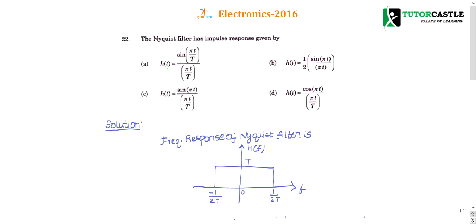Question number 22: the Nyquist filter has an impulse response given by a certain formula. If you can remember the formulas of the Nyquist filter you can directly answer. If not, if you can remember its frequency response you can answer this question easily. Let us see the concept of the Nyquist filter — how its frequency response is defined, and from that we'll get the time domain impulse response.